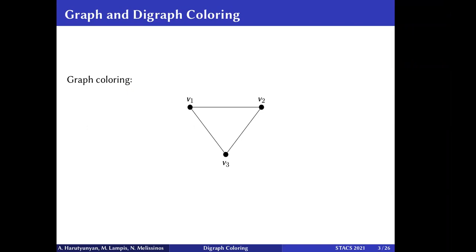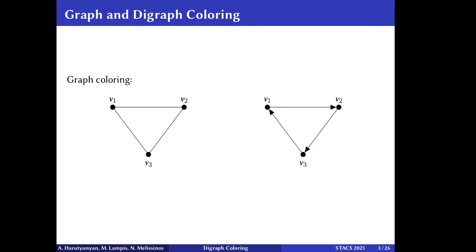In classic graph coloring, we want to assign colors to vertices such that each two vertices sharing an edge have different colors. For this triangle, for example, we need three colors — say white, black, and green — in order to have this property. These are called proper colorings.